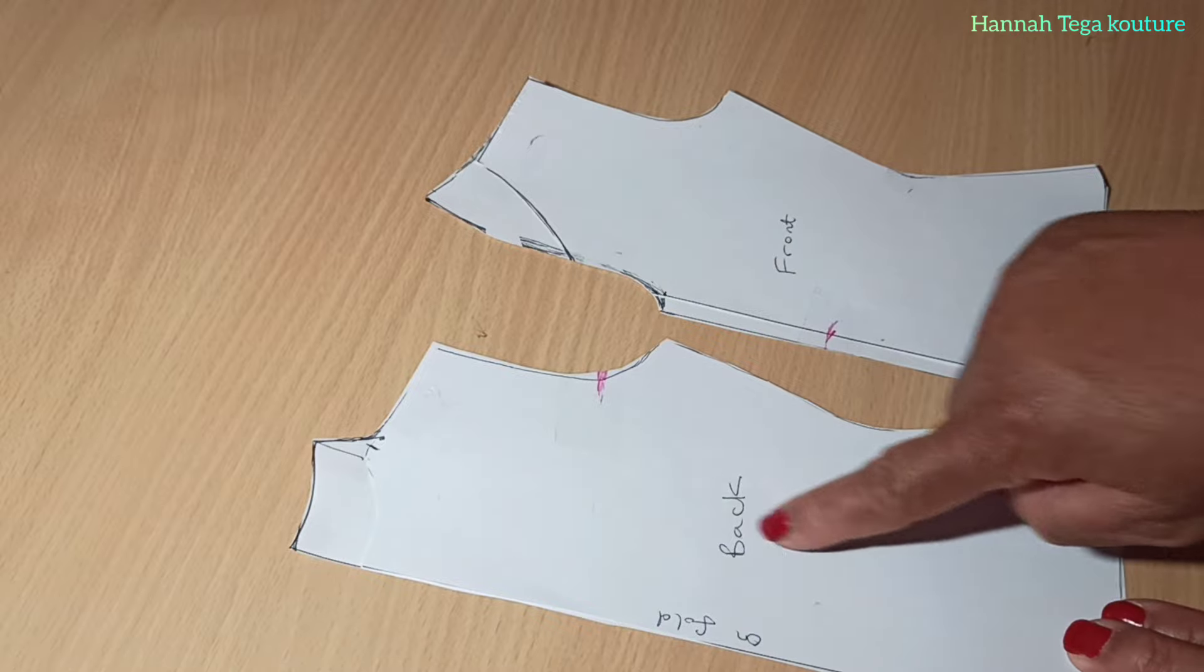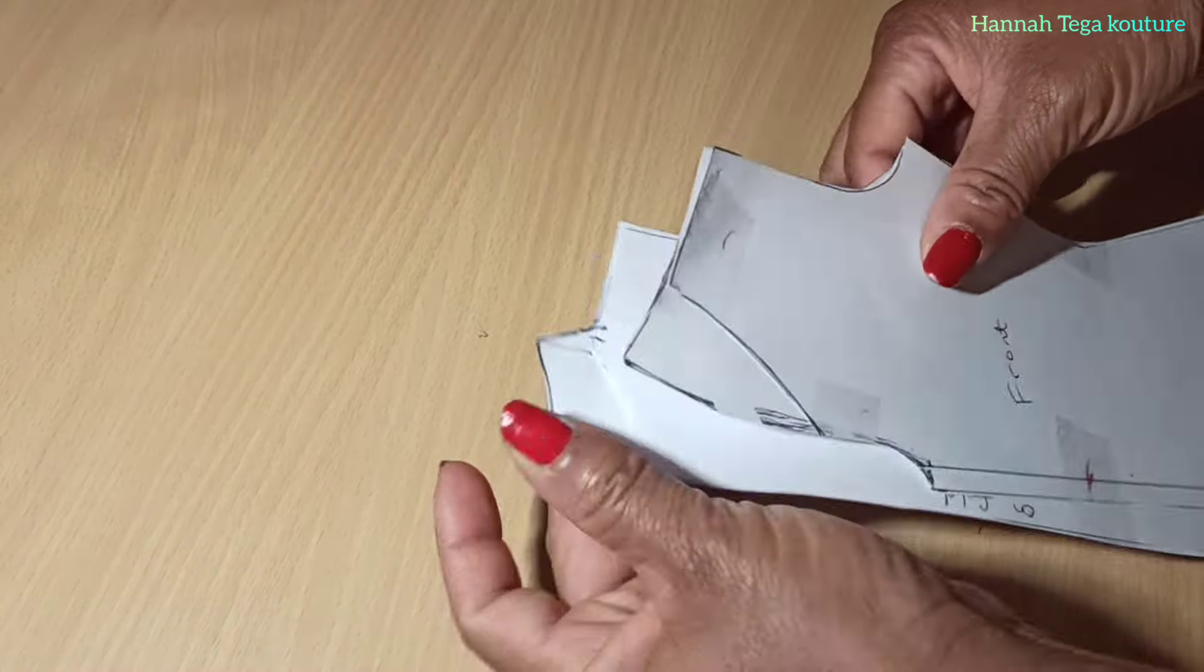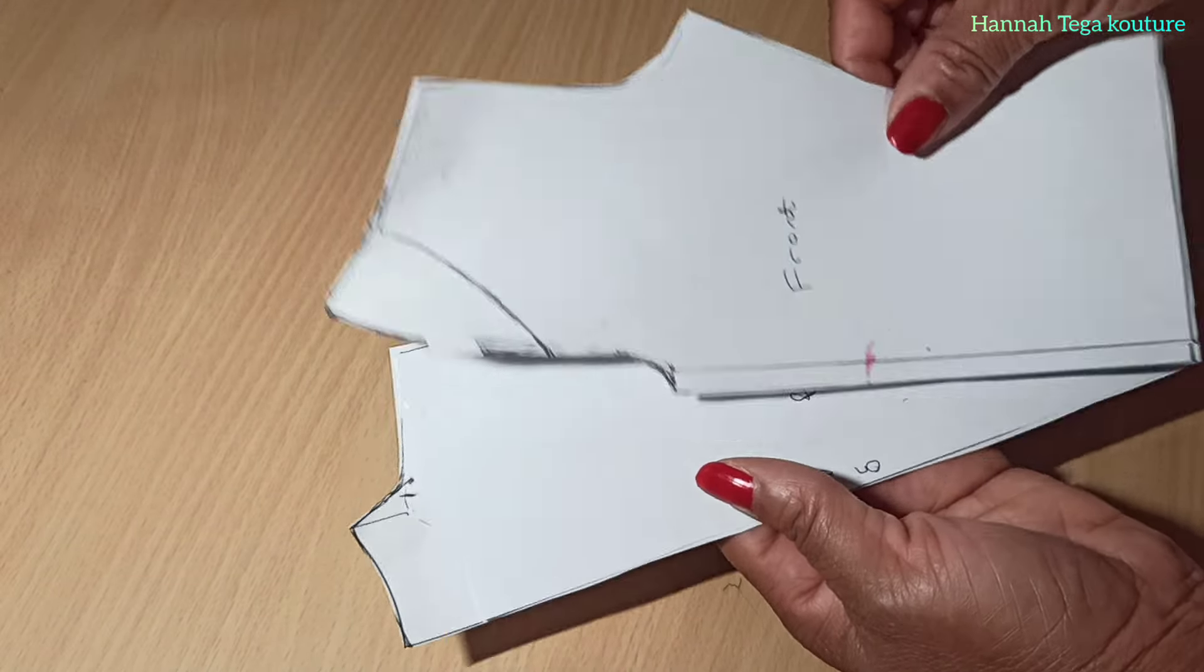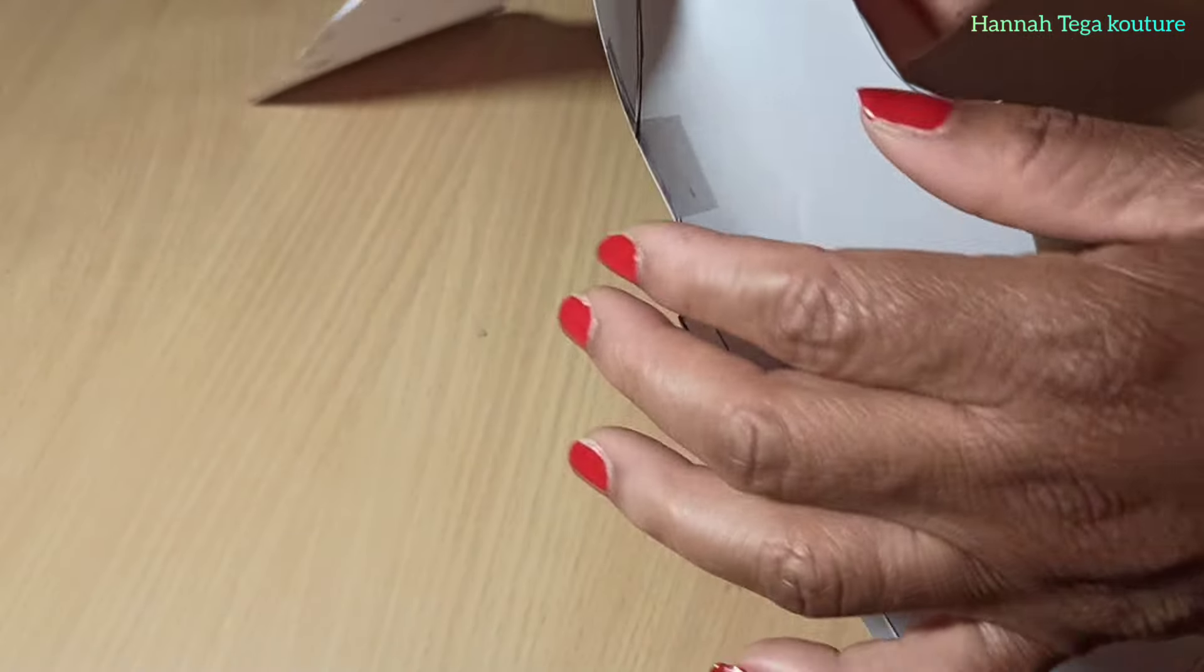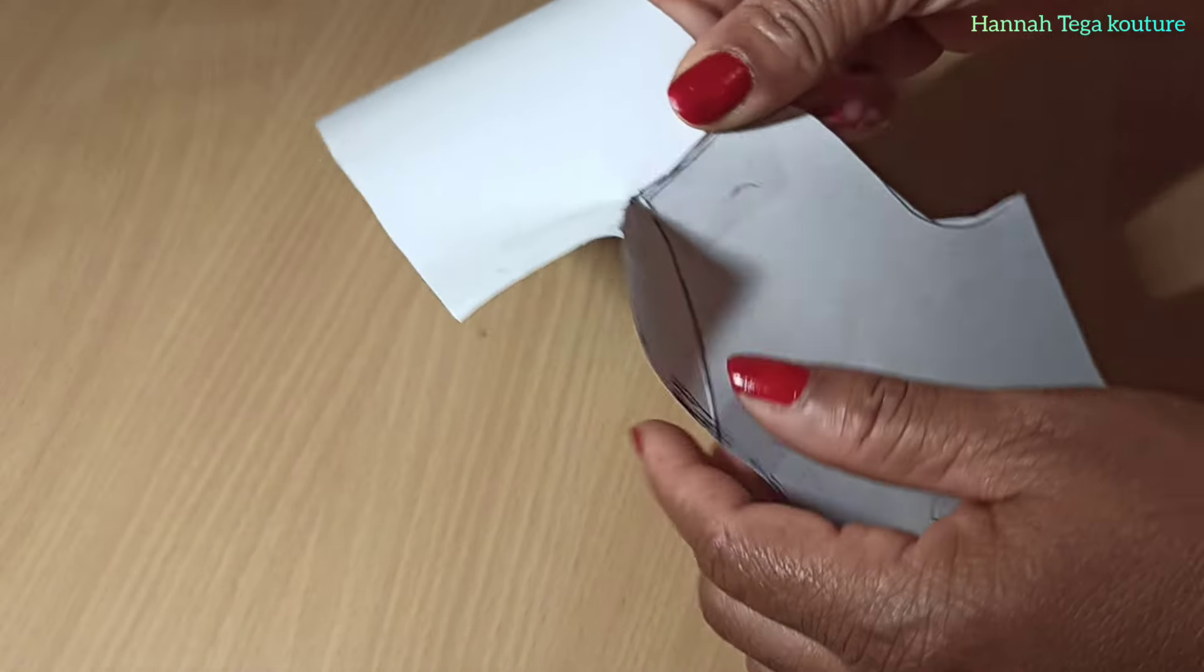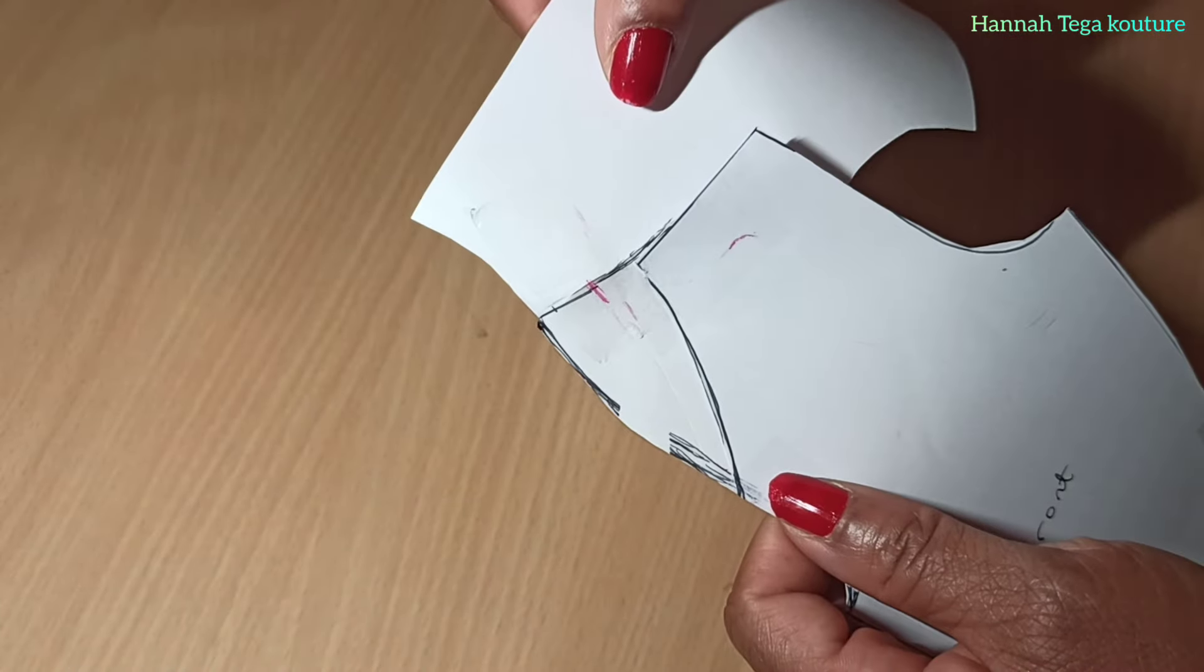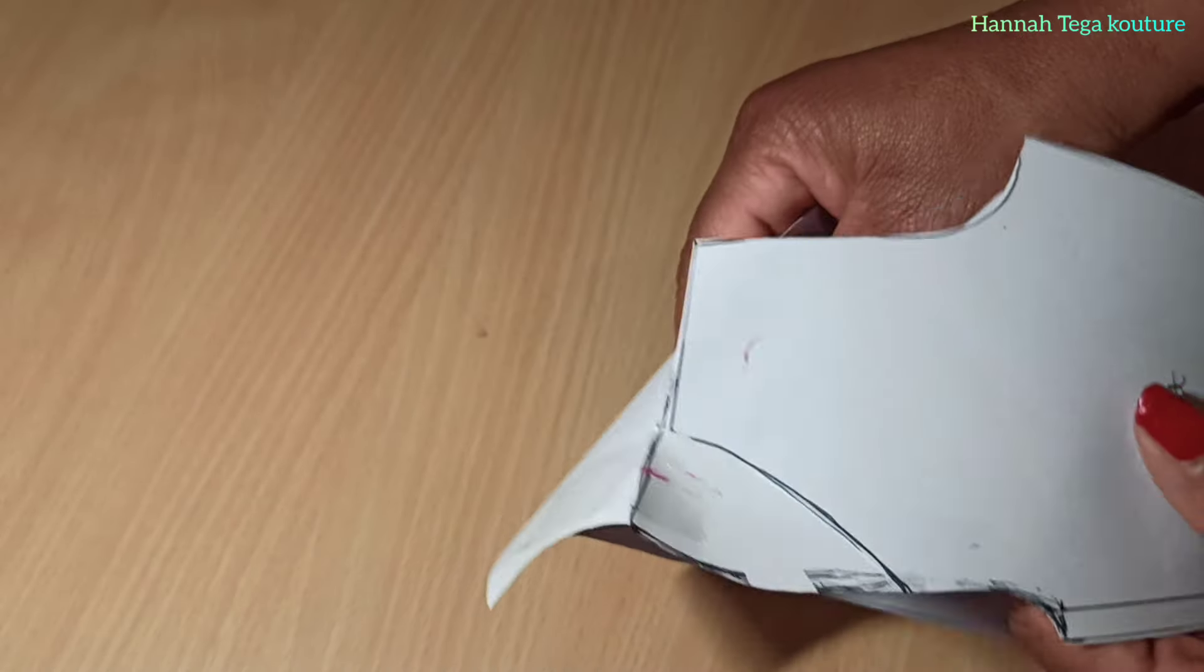Another thing you would add to your bodice is your dart, but in this video I haven't done that because the focus is on the neckline. So after applying a cello tape, you can see that the neckline is well built up. Don't forget the total height from the shoulder up is 2.5 inches.